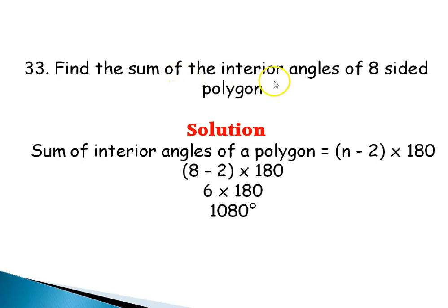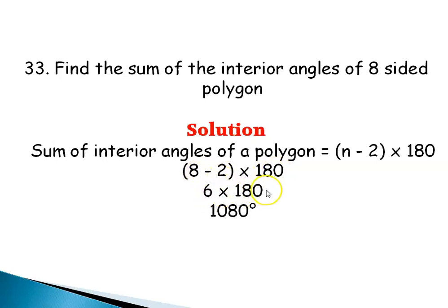Question 33: Find the sum of the interior angles of an 8-sided polygon. The formula is (N − 2) × 180, where N is the number of sides. Since N = 8: (8 − 2) × 180 = 6 × 180 = 1080 degrees. This is the sum of the interior angles of an 8-sided polygon.